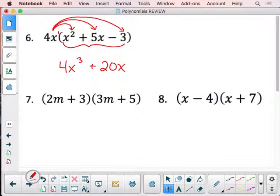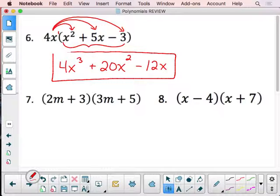Plus 20x squared. The 4 times 5 and x times x. And finally, 4x times negative 3 gives you negative 12x. Distributing that through multiplication and we do then add those exponents. You're not used to doing that when you're adding and subtracting.